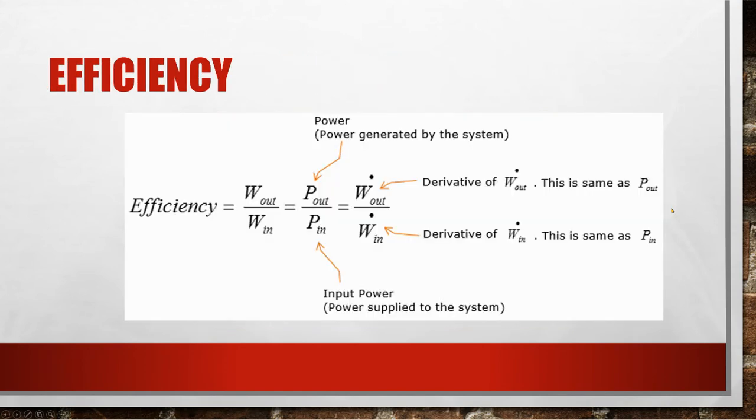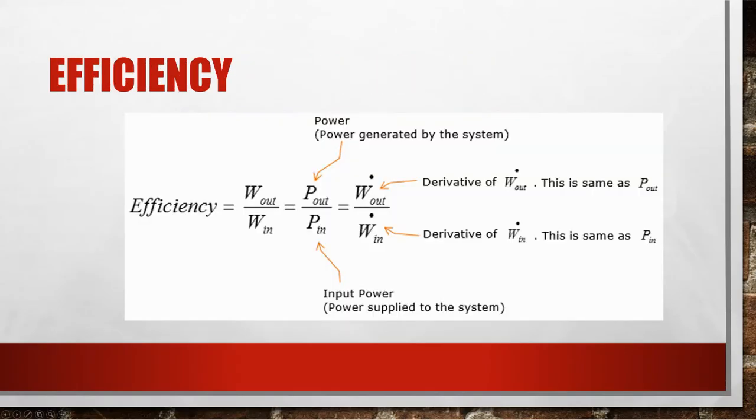All right, efficiency. Went too far, let's go back. Efficiency: W out divided by W in, where P out, or power, and work. Efficiency: work out divided by work in. That's just the easiest way to do it.